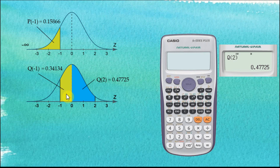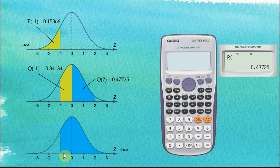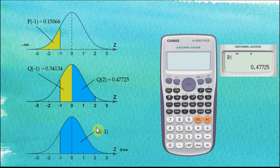Let's try another one. We go to Shift, Statistics, Distributions and this time we choose R — number 3. R is used to find the area from positive infinity to a given number. For example, to find the area from positive infinity to negative 1, we use R(−1). Summary: P is from negative infinity to the number; Q is from 0 to the number; R is from positive infinity to the given number.